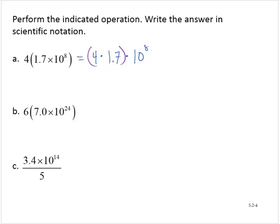Now, 4 times 1.7 is 6.8. So then this is the same thing as 6.8 times 10 to the eighth, or just using the normal notation for scientific, 6.8 times 10 to the eighth.